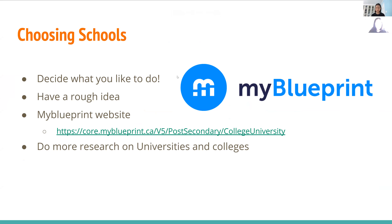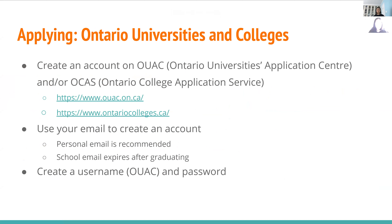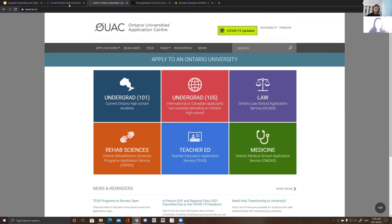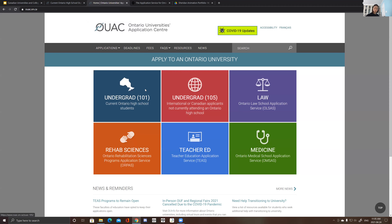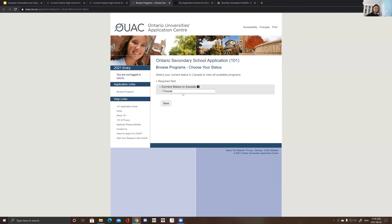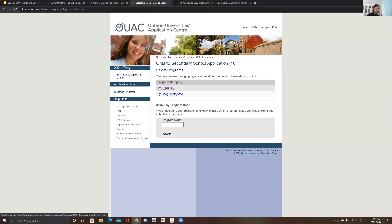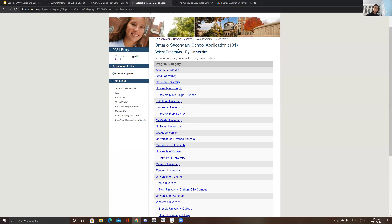It's really important after you've chosen certain universities or colleges to do more research on that school — for example, the reputation and student feedback and all that. For applying to Ontario universities and colleges, you actually apply through two websites: one is the OUAC, or Ontario Universities Application Center, and OCAS, the Ontario College Application Service. This is the university one and this is the college one. You can also search for programs through here, and browse by university or by your area. The same goes for college.